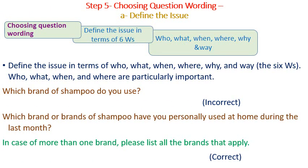Step five: choosing question wording. A — define the issue in terms of the six Ws. For example, 'Which brand of shampoo do you use?' is incorrect. The correct version is: 'Which brand or brands of shampoo have you personally used at home during the last month? In case of more than one brand, please list all the brands that apply.'